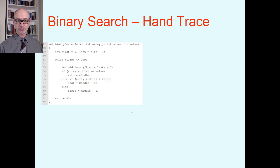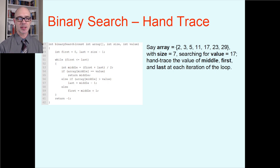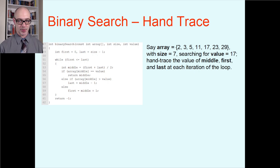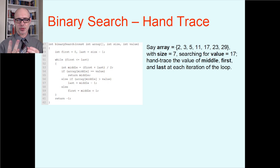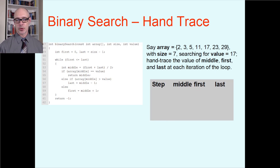To prove we understand the algorithm, we'll hand trace an example, just as we did with every algorithm in Chapter 8. We'll use the same array as with linear search: 2, 3, 5, 11, 17, 23, 29. Since binary search requires a sorted array, and this one is sorted smallest to largest, it works. Size is 7, and we're searching for the value 17 — which took five steps with linear search. We'll track the middle, first, and last variables on every iteration of the loop.